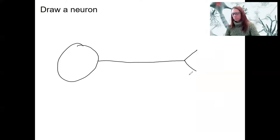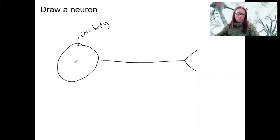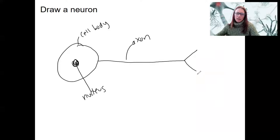That's my neuron. Cell body — with a nucleus in there. This is the axon, and these are the axon terminals. That is a basic neuron.